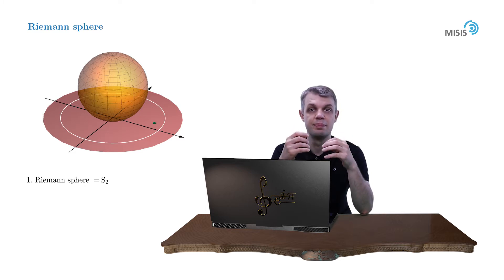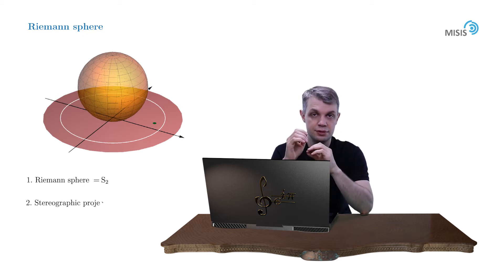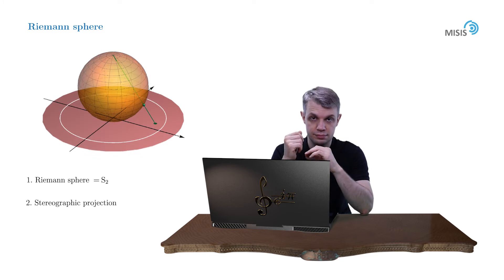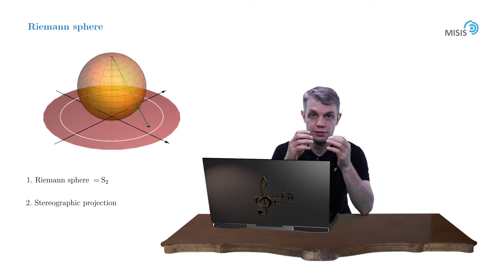Then every point of a complex plane can be projected onto the sphere with the help of so-called stereographic projection. We connect a particular point on a complex plane with the north pole of a sphere with the help of a straight line. And then the intersection of this line with the sphere is the image of a particular point in a complex plane on a sphere.